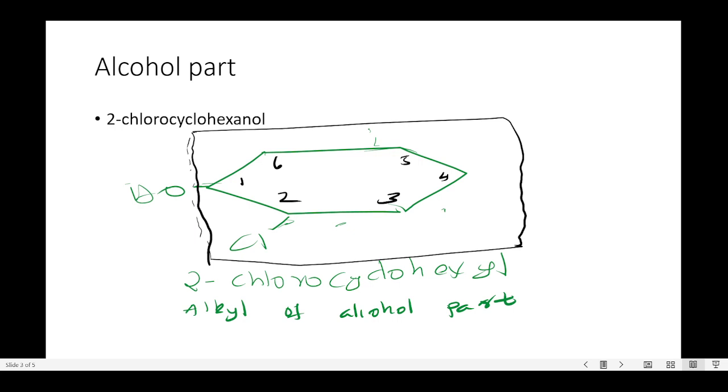We can see the numbering of the ring. This will be 2-chlorocyclohexanol, but we are more concerned with the alkyl part. The alkyl part of 2-chlorocyclohexanol is 2-chlorocyclohexyl. For methyl alcohol, the alkyl part is methyl; ethyl alcohol, the alkyl part is ethyl. So for this compound, the alcohol part is 2-chlorocyclohexyl.